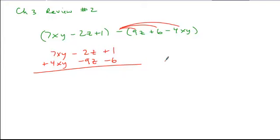Now all I have to do is combine straight down these vertical columns, and I get my answer: 11xy minus 11z minus 5.